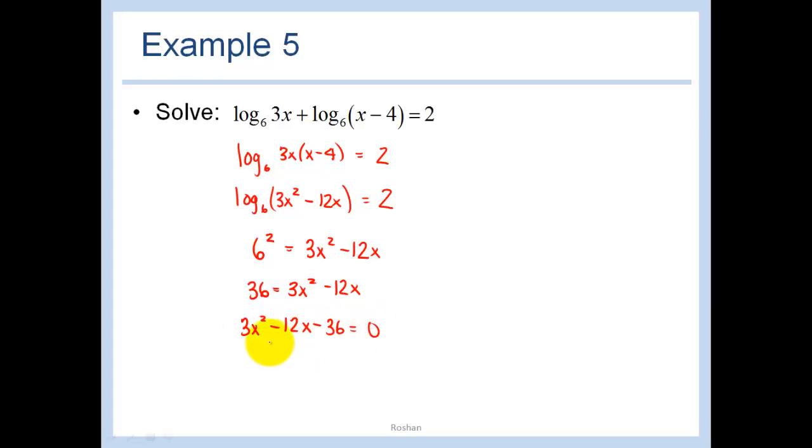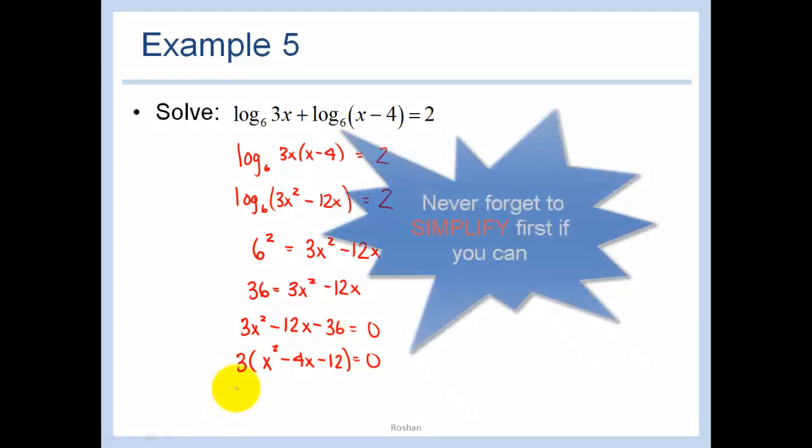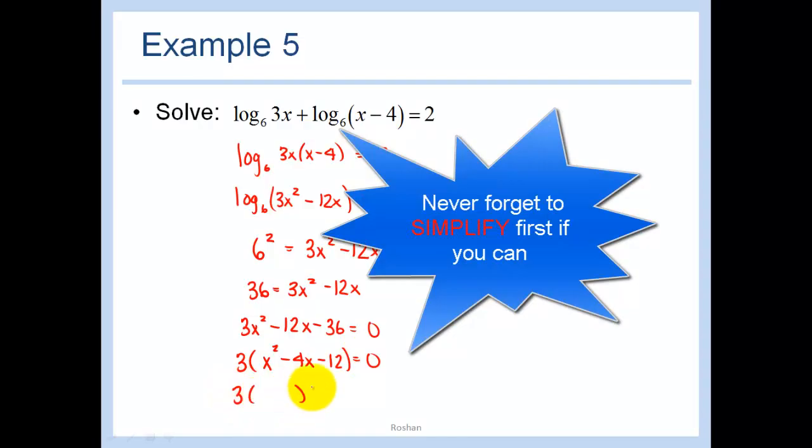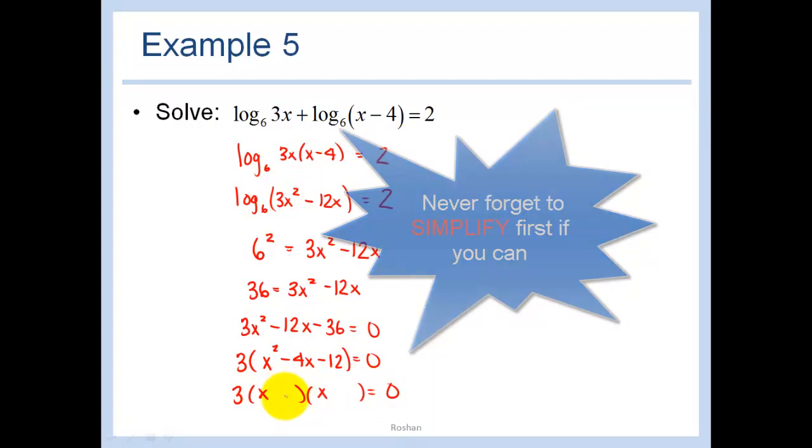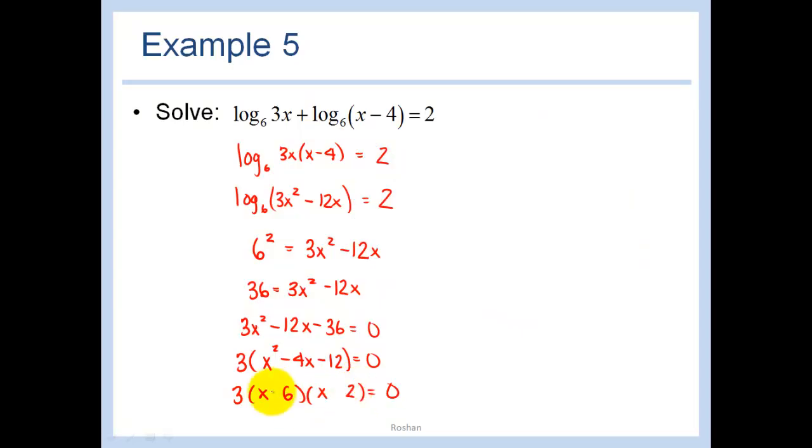Let's always try and simplify before we try and factor this, so we can take out a 3. x squared minus 4x minus 12 is equal to 0. Never forget to simplify first if you can. So we have an x and an x, we have a 6 and a 2, we have a minus and a plus. So we have x equals 6 or x equals negative 2.